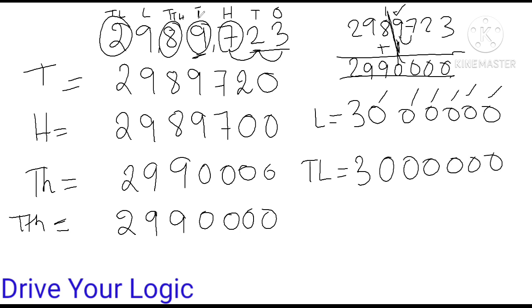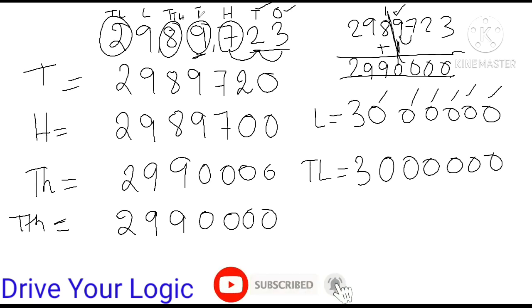This is how you have to round off a given number. First, you have to identify the place values — which is the ones place, tens place, hundreds place, thousands place, ten-thousands place, lakh place, ten-lakh place. See the digit immediately to the right of the place you are rounding — if it is 5 or more, add 1; otherwise keep it. That's all for today. If you like my video please give a like, and have a great day!